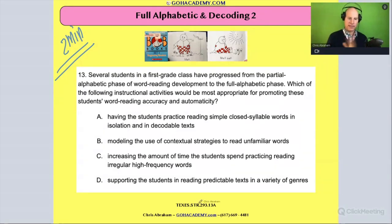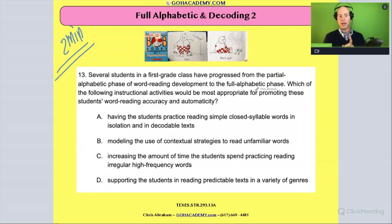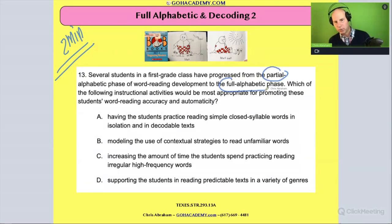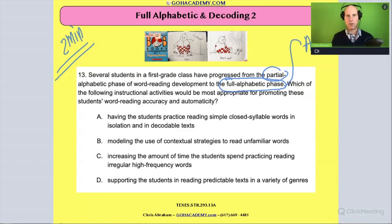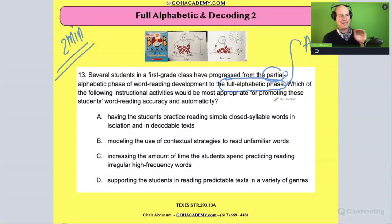From the Science of Teaching Reading, page 293: several students in a first grade class have progressed from the partial alphabetic phase of word reading development to the full alphabetic phase. So they've gone from partial to full. They are now at the stage where they're using the alphabetical principle to do letter-sound correspondence to begin to decode basic words. Which of the following instructional activities would be most appropriate for promoting these students' word reading accuracy and automaticity?